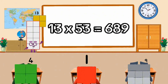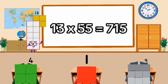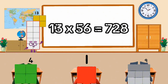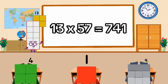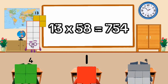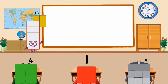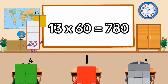13 times 53 equal 689. 13 times 54 equal 702. 13 times 55 equal 715. 13 times 56 equal 728. 13 times 57 equal 741. 13 times 58 equal 754. 13 times 59 equal 767. 13 times 60 equal 780.